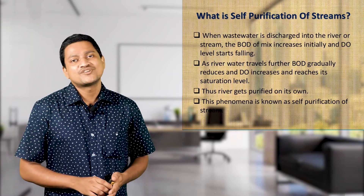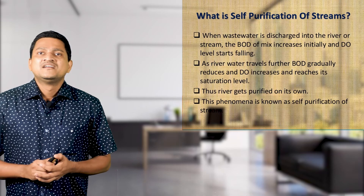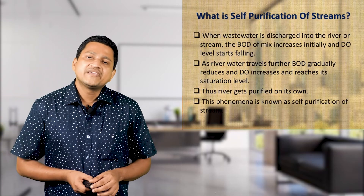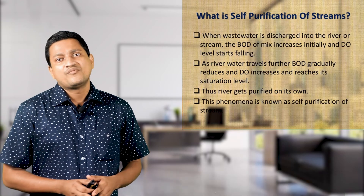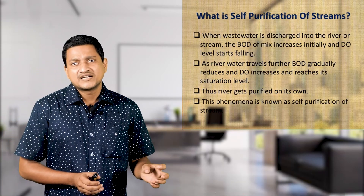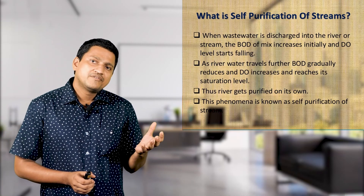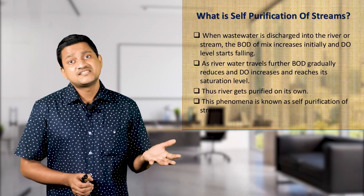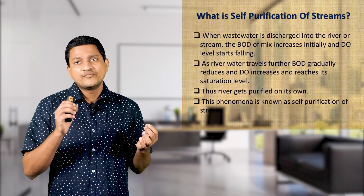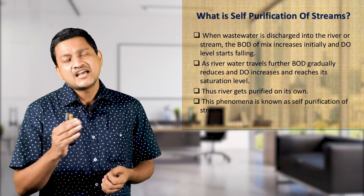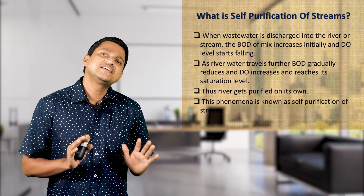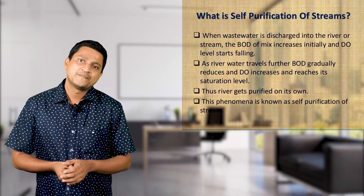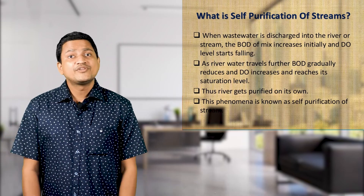The stream has the capacity to purify itself. Once waste enters the water, the BOD initially increases and DO is reduced, then BOD gradually reduces and DO increases to reach a saturation level — this is the self-purification of the stream.